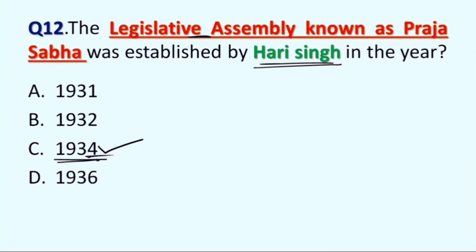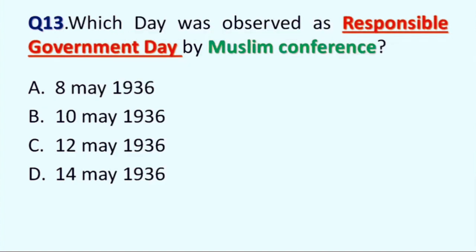Next question is: on which day was Responsible Government Day observed by Muslim Conference? Option A: 8th May, B: 10th May, C: 12th May, and D: 14th May. Correct answer is 8th May 1936. This day was observed as Responsible Government Day by Muslim Conference. Muslim Conference was later changed into National Conference in the year 1931.